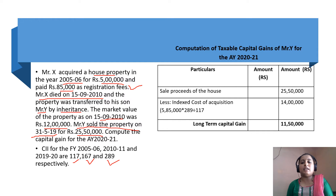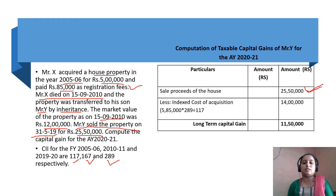The sale proceeds of the house — that is 25,50,000. Rs. 25,50,000 is the sale proceeds of the house.